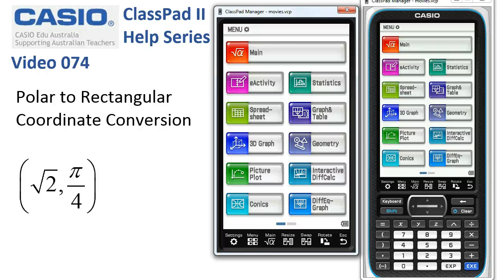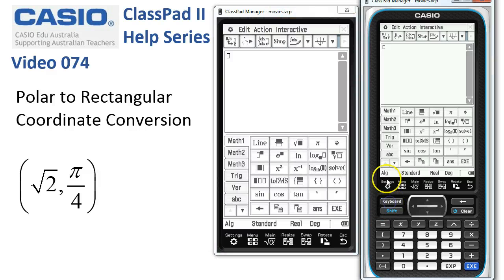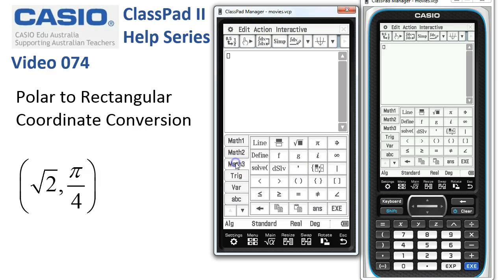Polar to rectangular coordinate conversion. So we're in main to carry this out and we'll get the keyboard up and head down to Math3 keyboard to get things going.